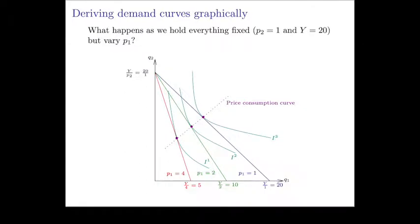So remember, if we vary the price of good 1, holding everything else fixed, that's just going to rotate the budget constraint. Why does that happen? Well first, let's look at this corner of the budget line.